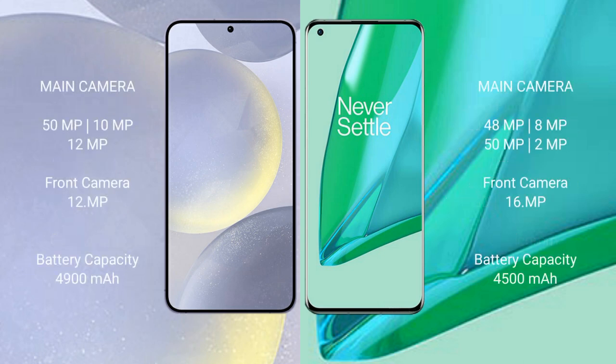Samsung Galaxy S24 Plus features a triple rear camera setup: 50MP plus 10MP plus 12MP, with a 12MP front camera. OnePlus 9 Pro features a quad rear camera setup: 48MP plus 8MP plus 50MP plus 2MP, with a 16MP front camera.